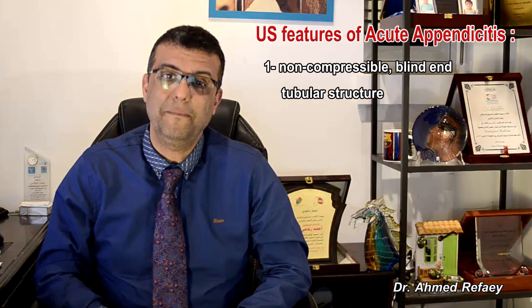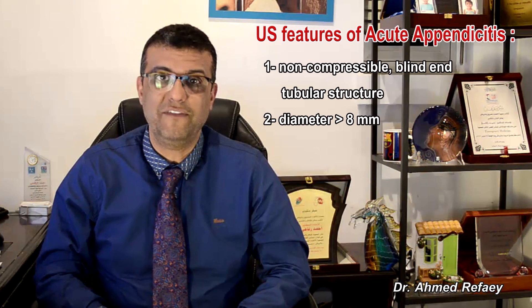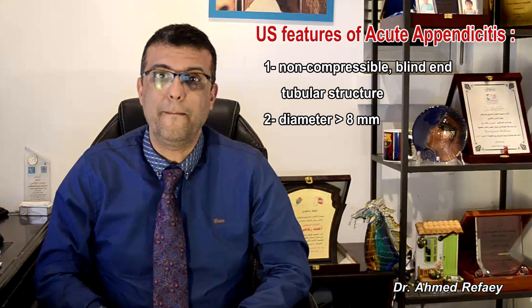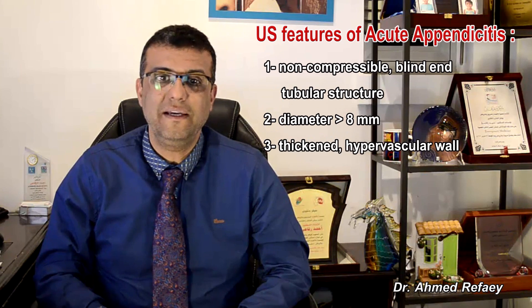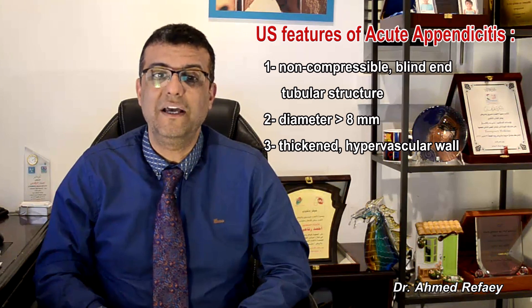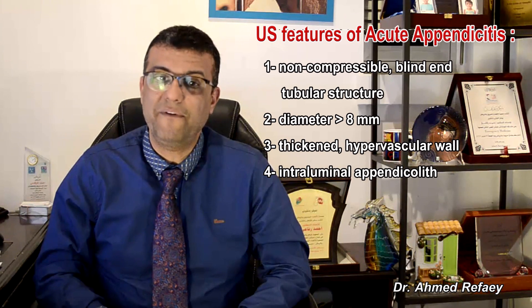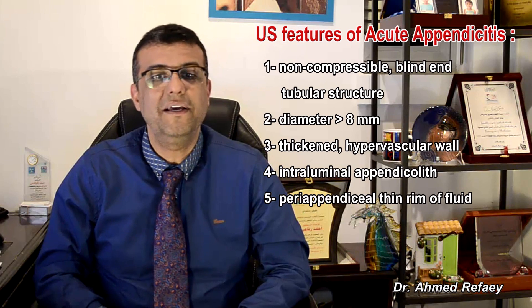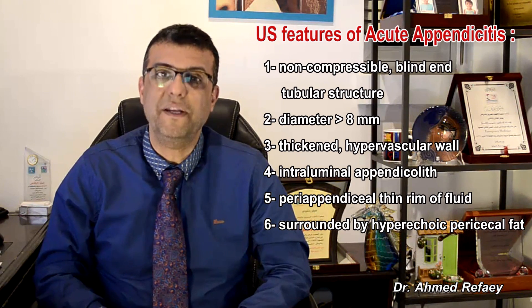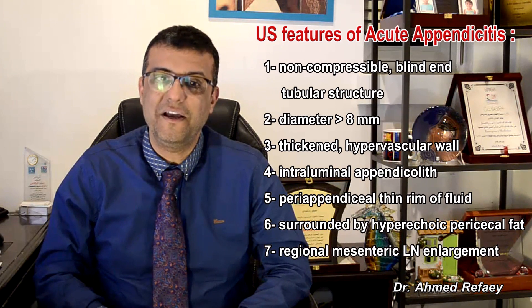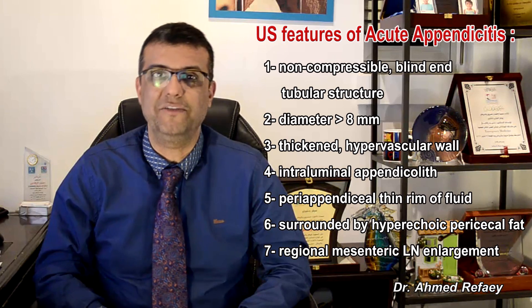Let us summarize the ultrasound features of acute appendicitis: Number 1 — non-compressible, blind, and tubular structure. Number 2 — dilatation of appendix with diameter more than 8 mm. Number 3 — thickening and hypervascular wall. Number 4 — intraluminal appendicolith. Number 5 — periappendiceal thin rim of fluid. Number 6 — surrounded by hyperechoic periappendiceal fat. Number 7 — regional mesenteric lymph node enlargement. This is everything regarding the role of ultrasound in the diagnosis of acute appendicitis. Thank you very much.